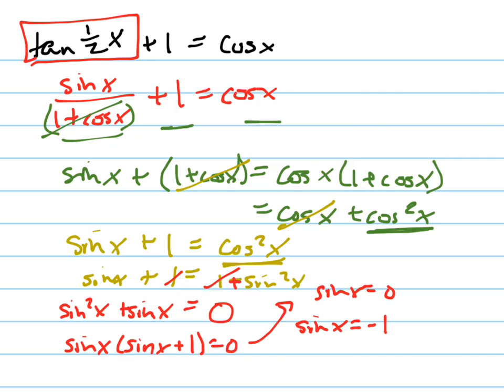Which means sin(x) = -1. And this means that x equals, remember the sine is your y-coordinate, where does the y-coordinate equal 0 in one revolution around the circle? At 0 and π.